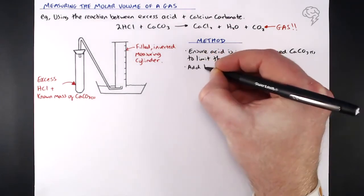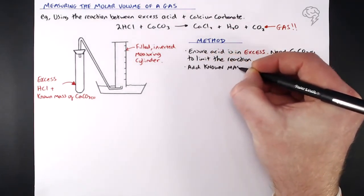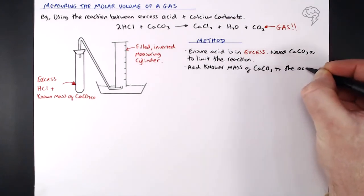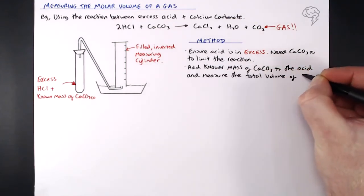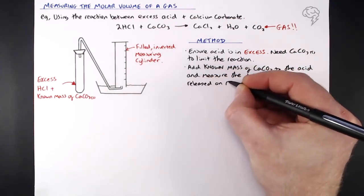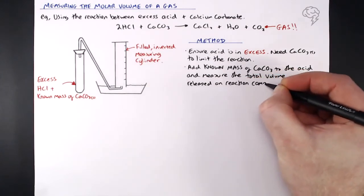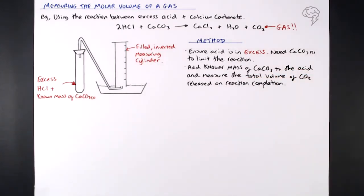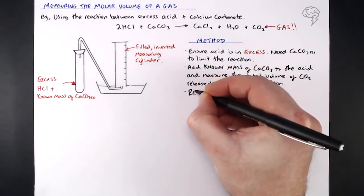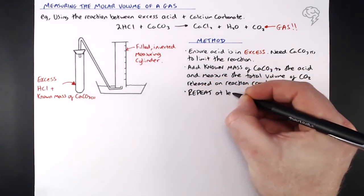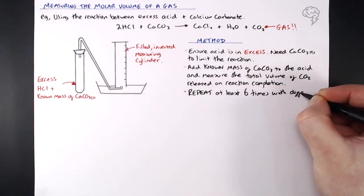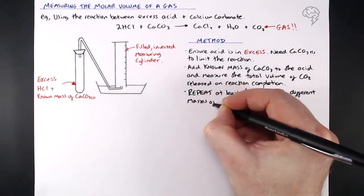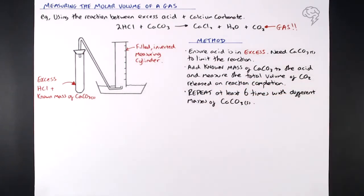Because later on, we're going to be looking at the relationship between the mass of calcium carbonate put in there and the volume of carbon dioxide given off. So in order to do that, it's got to be the calcium carbonate that dictates how much carbon dioxide is given off, so we want that limiting the reaction. Once we've made sure of that, we add a known mass of that calcium carbonate to the acid and measure the volume of carbon dioxide released on reaction completion.